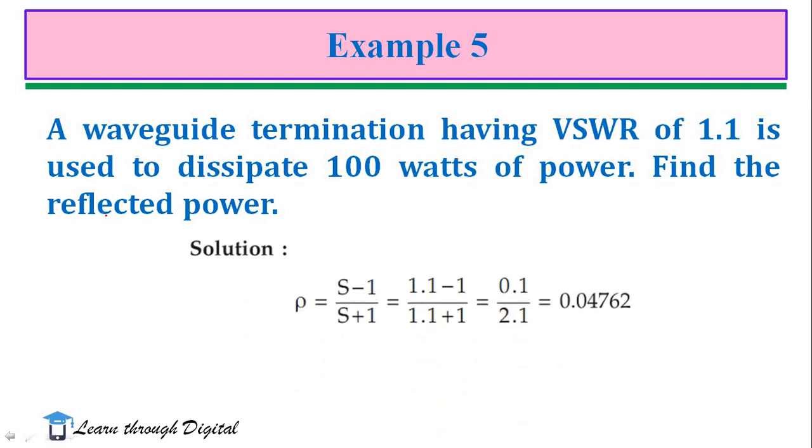VSWR is given 1.1. So, reflection coefficient is equal to SWR minus 1 divided by SWR plus 1. So, we substitute the value. We will get the reflection coefficient is 0.04762.